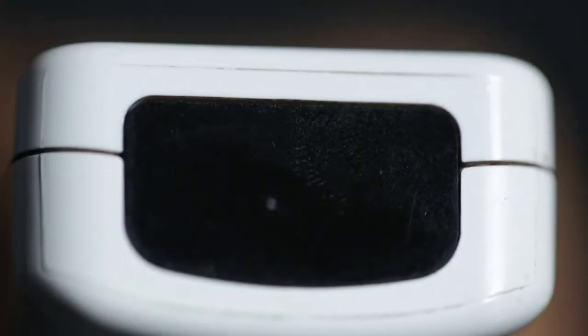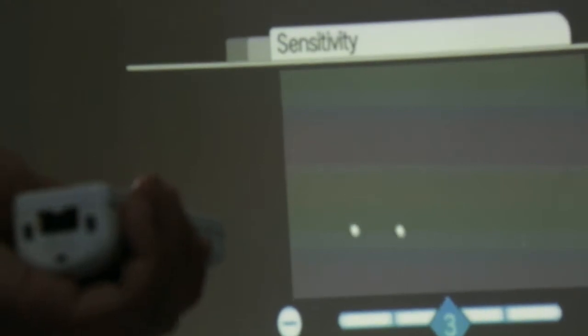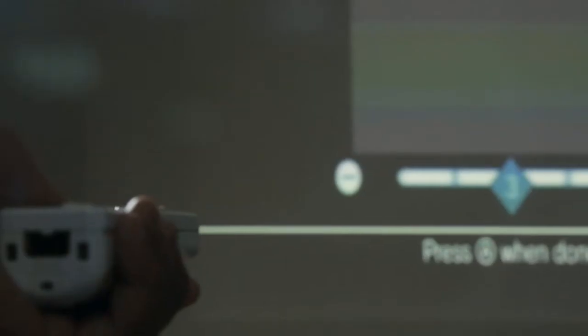The Wii also contains an infrared sensor at the head of the remote. This translates the signals by the sensor bar near the television and are used to determine the location of the remote. So when the light from the sensor moves to the bottom of the Wii camera, the cursor moves to the top of the screen, and vice versa.